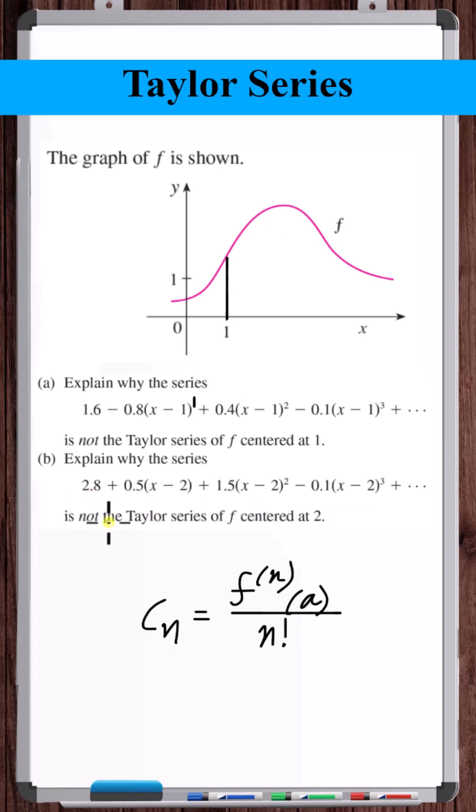Explain why this series here is not the Taylor series of f centered at 2. Okay, so 2 is approximately right here. The coefficient on the n equals 1 term is positive, which looks like that makes sense.